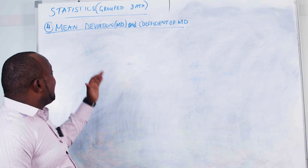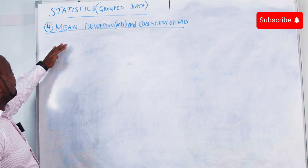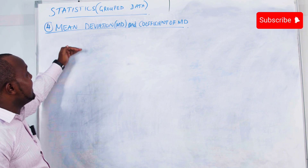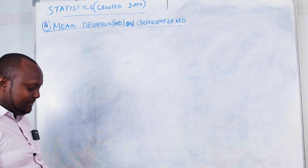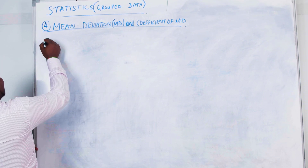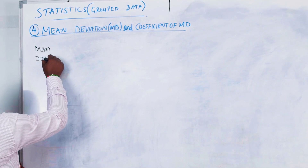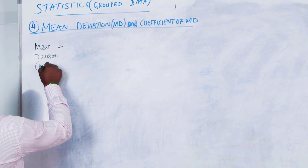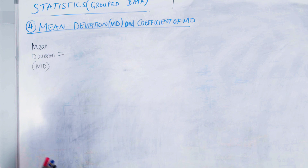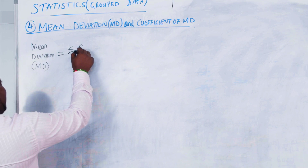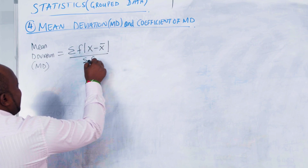So it is the mean deviation. The word itself is self-explanatory when you interpret it from layman's language — mean deviation. So how do we calculate mean deviation? I will be using MD to refer to mean deviation. For group data, it is the summation of f times the absolute value of x minus x-bar, all over summation of f.